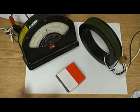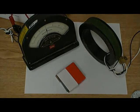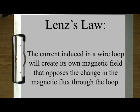That is Lenz's Law. Lenz's Law states that the current induced in a wire loop will create its own magnetic field that opposes the change in magnetic flux through the loop.